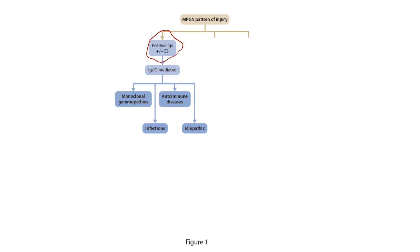If the deposits are immunoglobulins plus or minus complement, this is classified as immunoglobulin immune complex-mediated MPGN pattern of injury. You must exhaust all investigations to find the cause, which may be monoclonal gammopathy, infections, or autoimmune diseases.